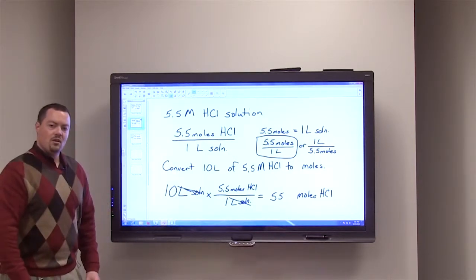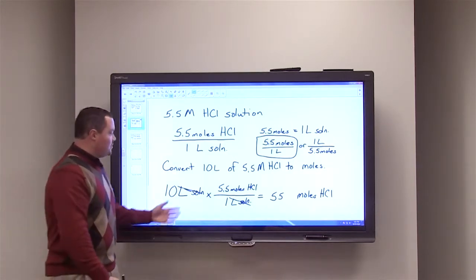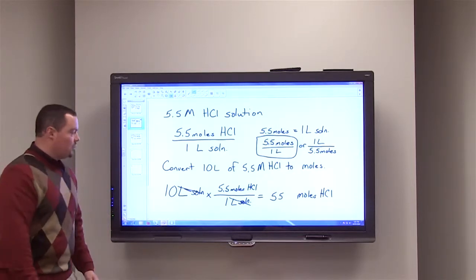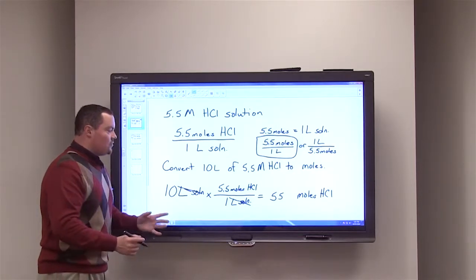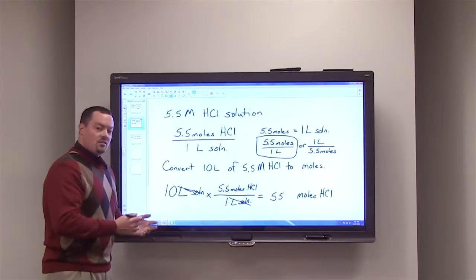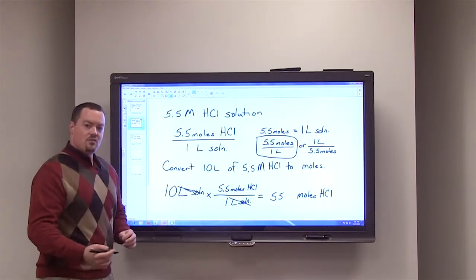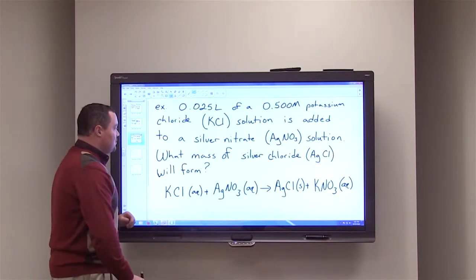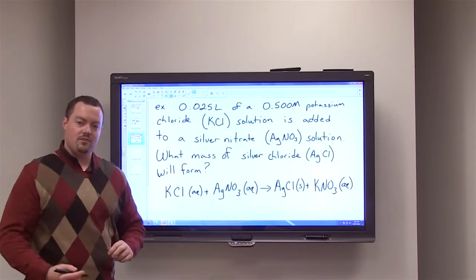We find that we need 55 moles of HCl to make 10 liters of a 5.5 molar HCl solution. That was the introduction to using molarity in stoichiometric problems — now let's look at a more difficult problem.